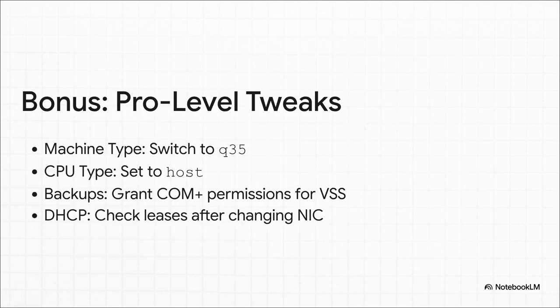While we're talking about pro-level moves, here are a few more quick tweaks. In your VM's hardware settings, change the machine type to q35 — it gives you better compatibility with modern stuff. Set the CPU type to host to pass through all your host CPU's features for a nice little performance bump. And one last thing: remember, when you change the network card type to VirtIO, the operating system sees a brand new network card, so you'll probably have to fix your IP address or update your DHCP reservations.